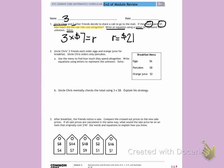Number 2. Uncle Chris's two friends each order eggs and orange juice for breakfast. Uncle Chris orders only pancakes. Use the menu to find how much they spend all together. Write equations using letters to represent the unknown. Solve. Well, I know that Uncle Chris's two friends each got eggs and orange juice. So I have two friends that are getting eggs, which are $6, and orange juice, which is $2.